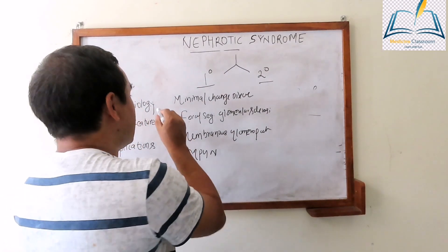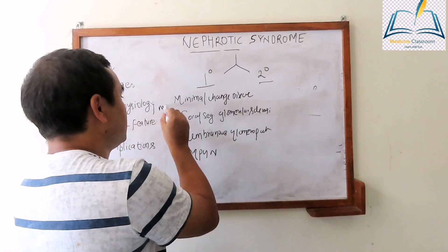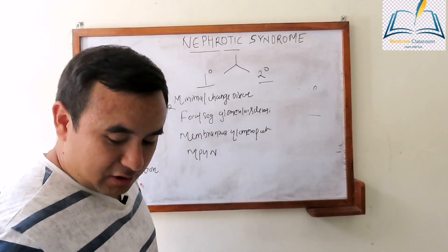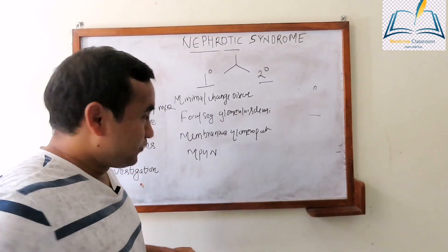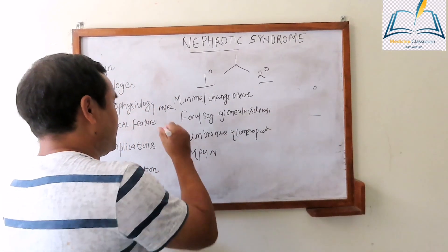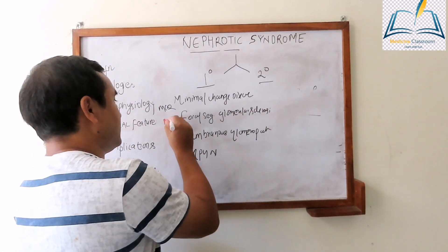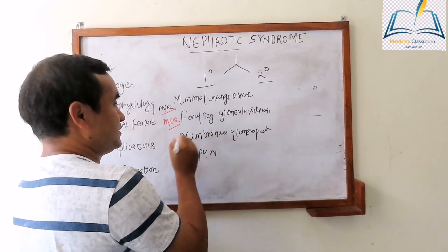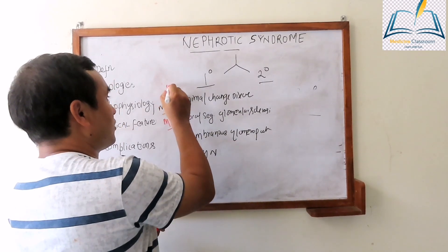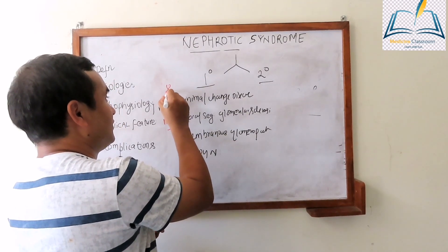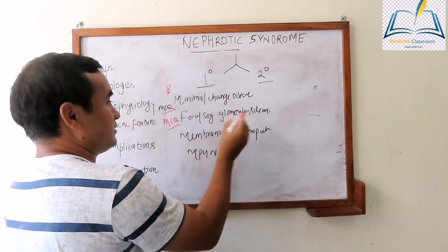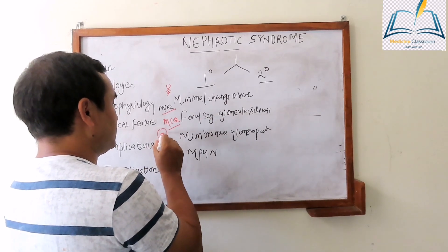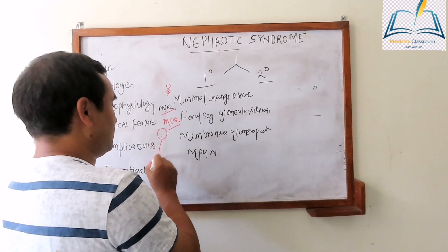This may be an MCQ question for you — note it. Minimal change disease is more common in children, and focal segmental glomerular sclerosis is more common in adults.